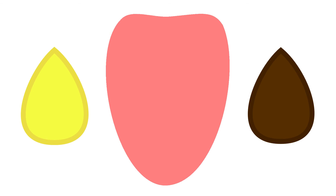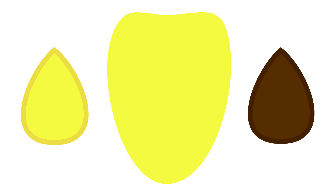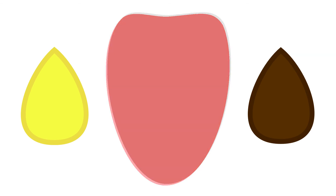You can see the shortcomings of this map yourself by placing drops of lemon juice or cola on your tongue in different areas. You'll be able to taste the sour of the lemon or the sweetness of the cola no matter where the drops fall on your tongue.